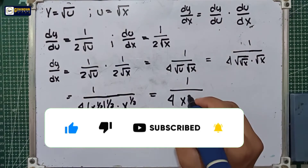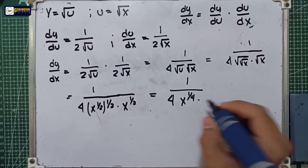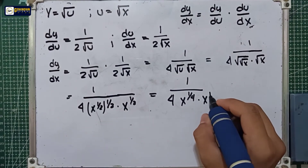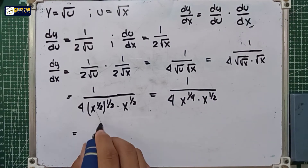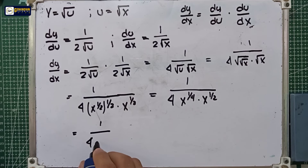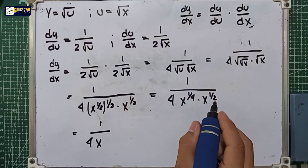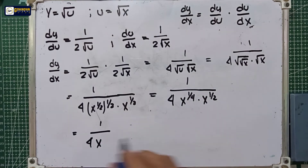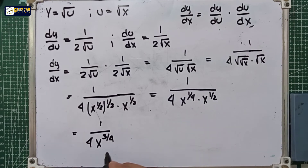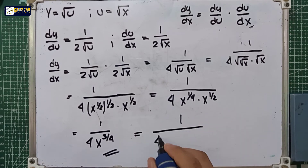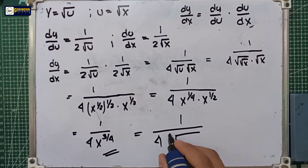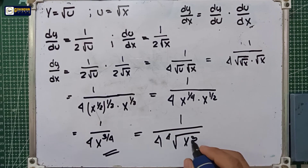So that is equal to 1/4 times x raised to 1/4, multiplied by x raised to 1/2. This is also equal to 1 over 4 times x raised to 3/4, since 1/4 plus 1/2 equals 3/4. If you want the radical form, that is equal to 1 over 4 times the fourth root of x cubed — this is the same result.